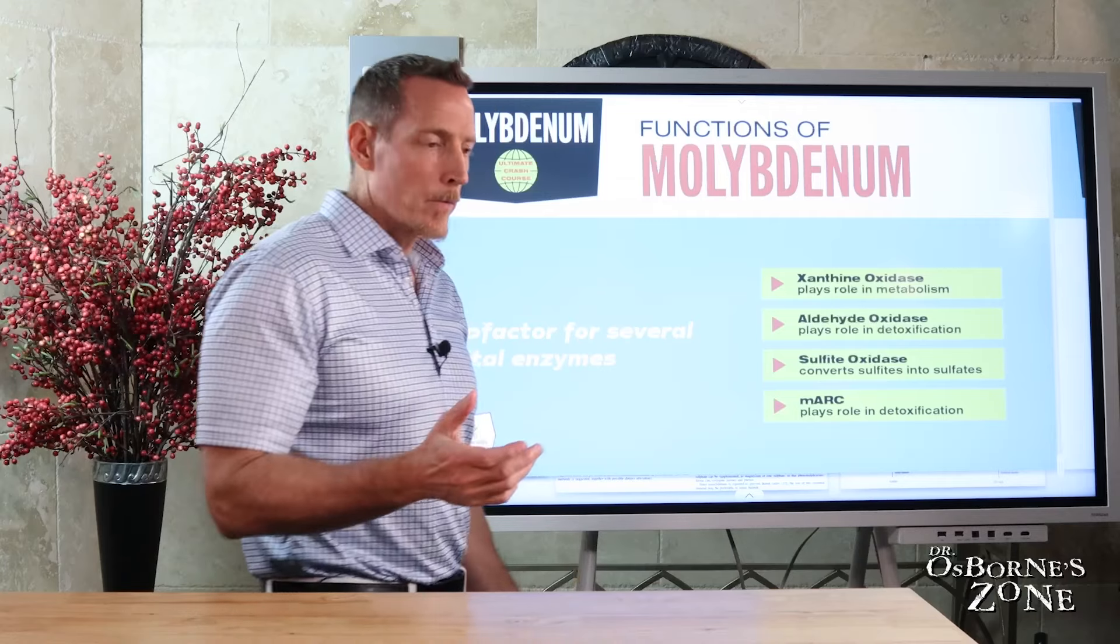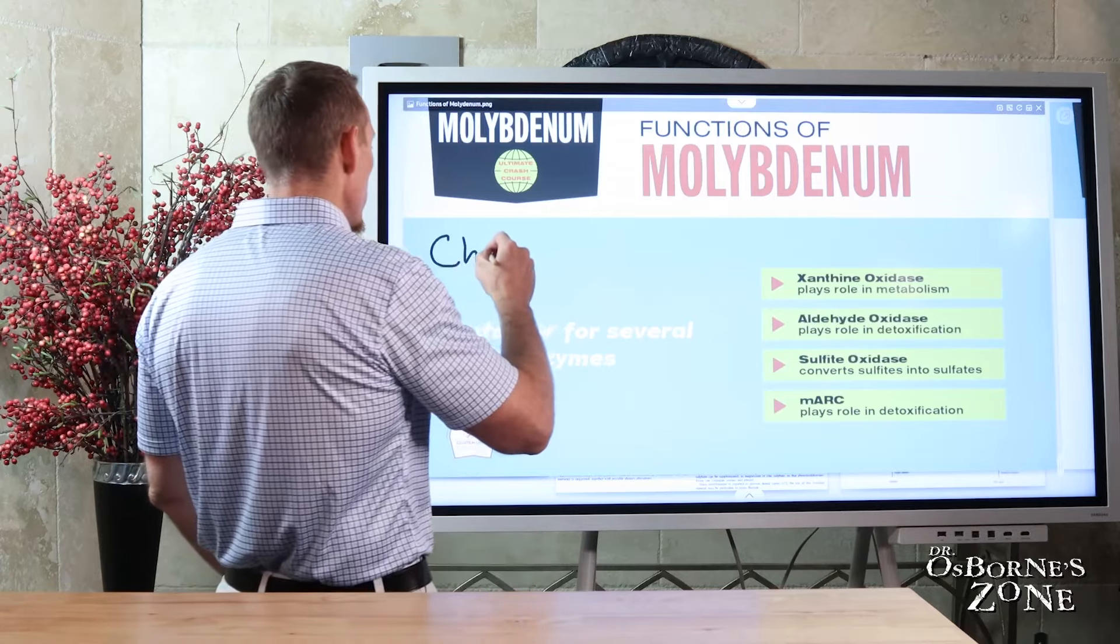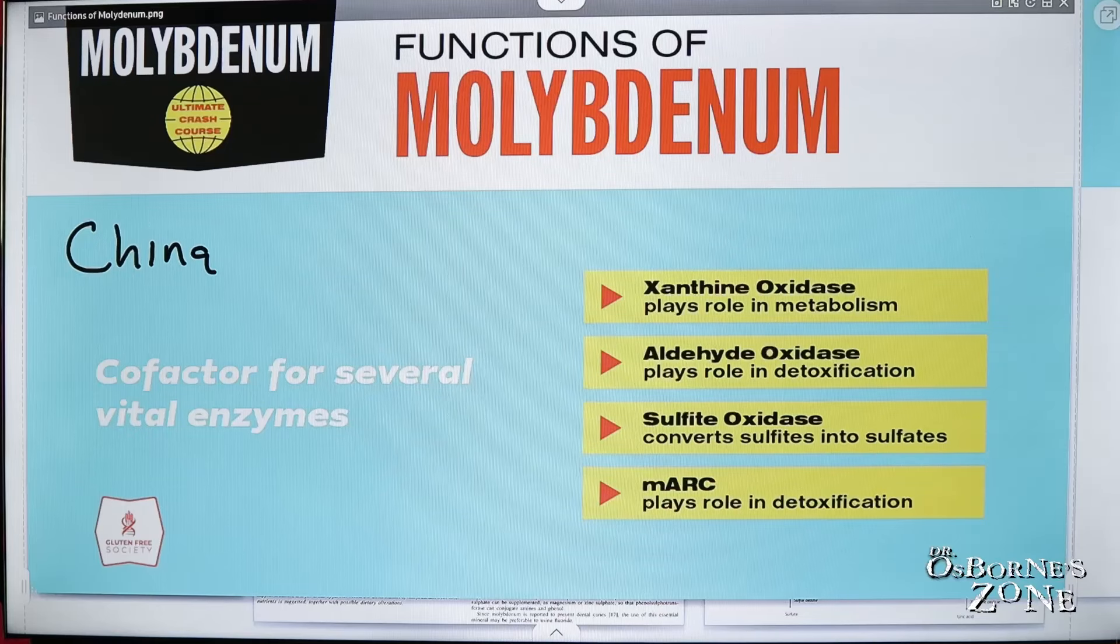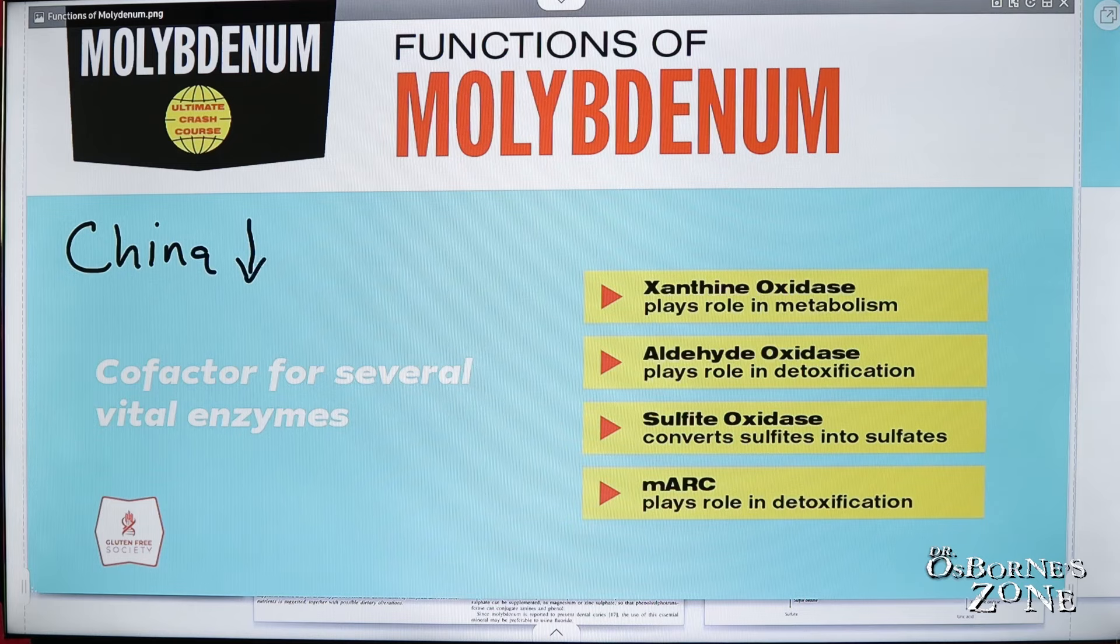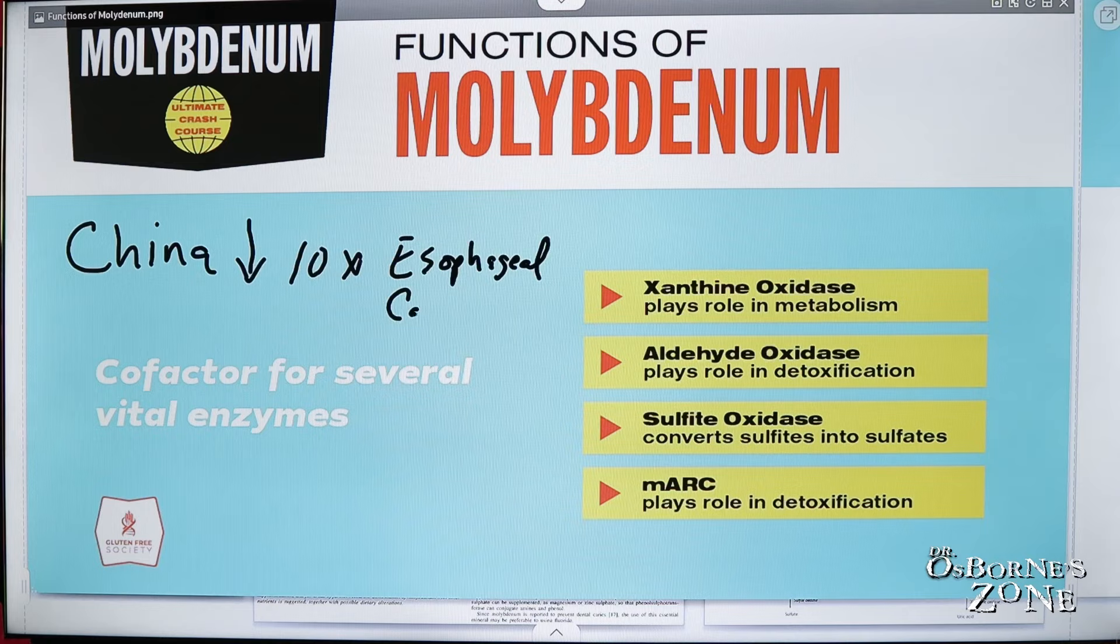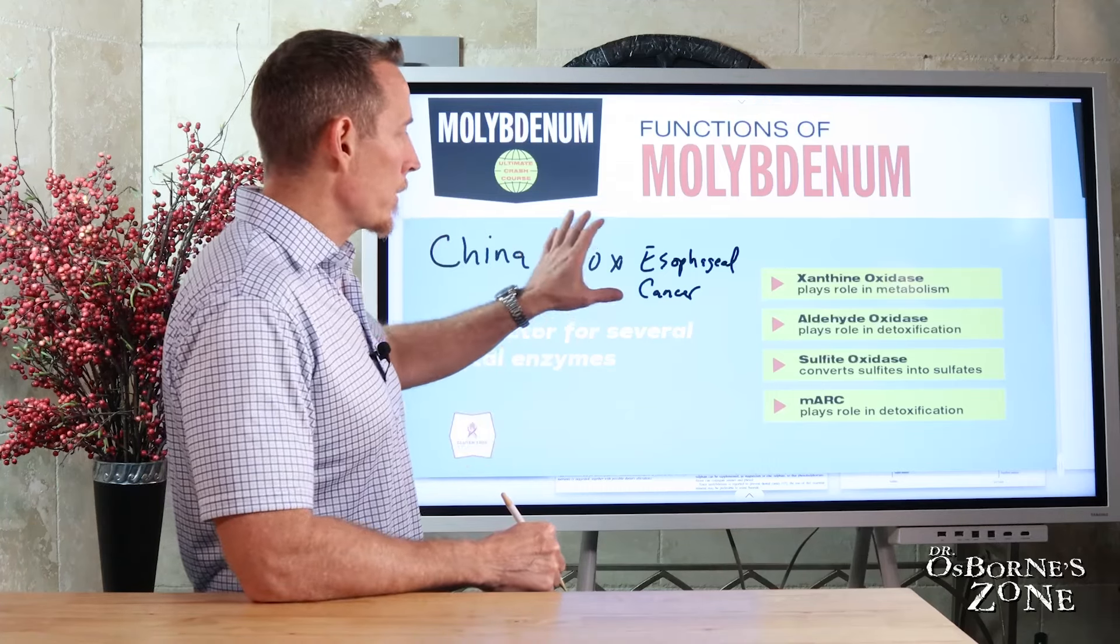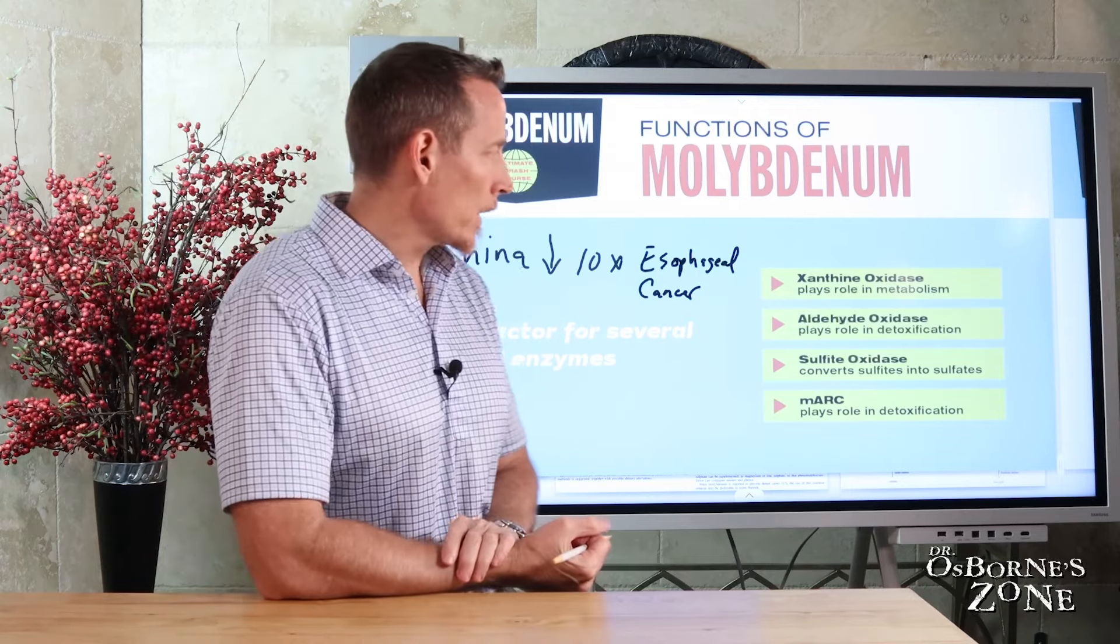There's one other thing to consider around molybdenum in cancer, which is there's this region in China where the soil levels of molybdenum are extremely low. This region has 10 times the esophageal cancer rates of the rest of China, and the suspicion here is that it's because molybdenum is so low and it's not as available. Now the mechanism there is not really quite known, but there are a number of researchers that have studied this epidemiologically.